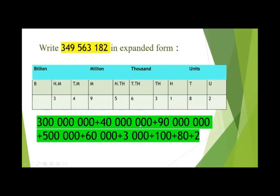We put all the place values of each digit and then we add them. All the place values of each digit are added — this is the expanded form. First we place all the digits in the place value table, then we add all the numbers' place values separately. This is called the expanded form.